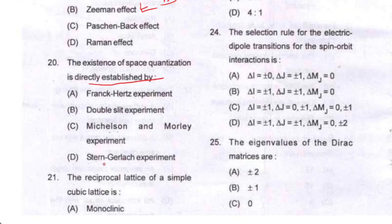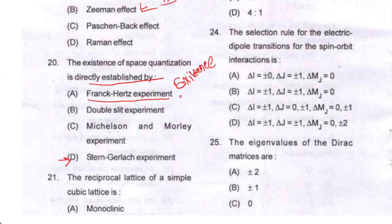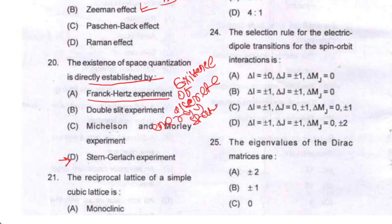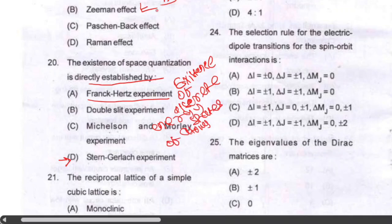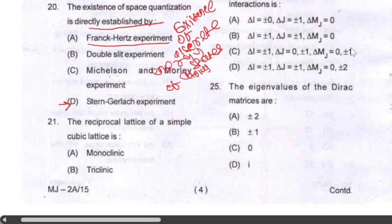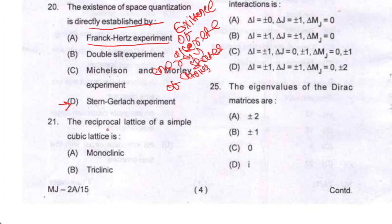Question number twenty: the existence of space quantization is directly established by the Stern-Gerlach experiment. So option D is your correct option. The Franck-Hertz experiment gives the existence of discrete energy states of atoms.